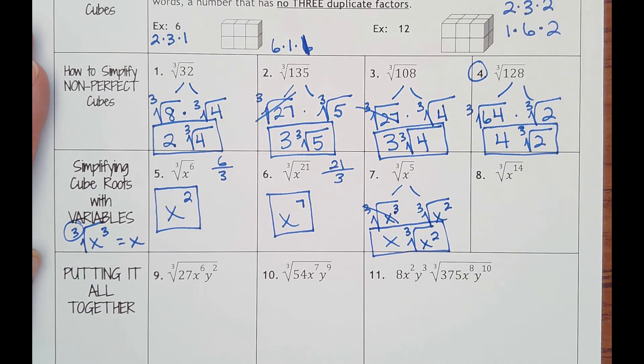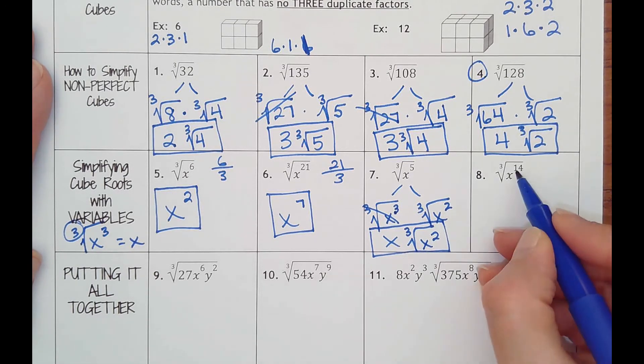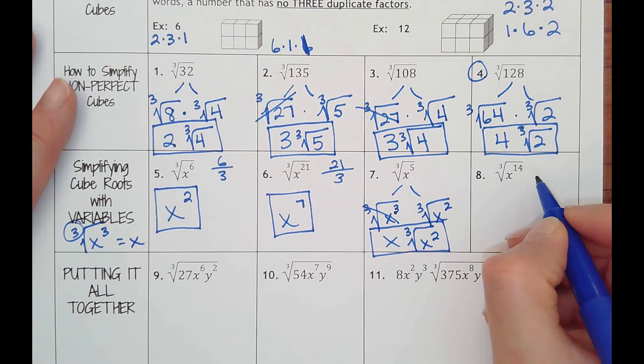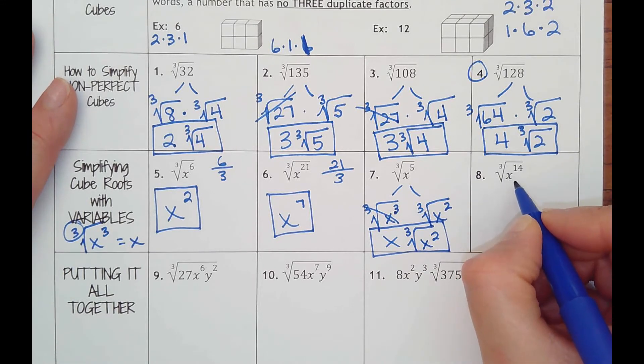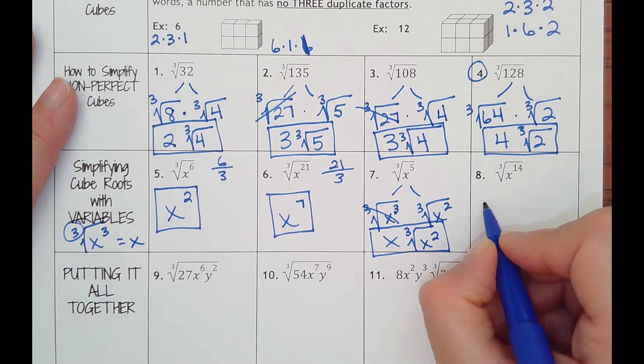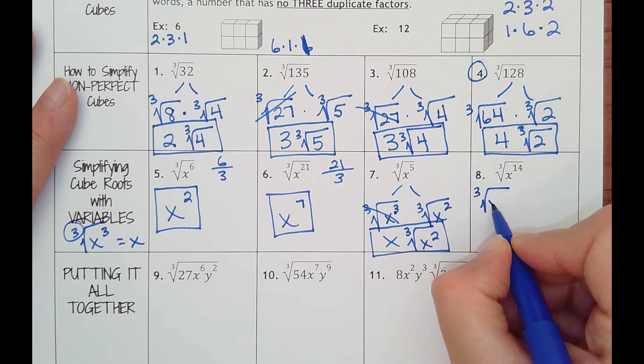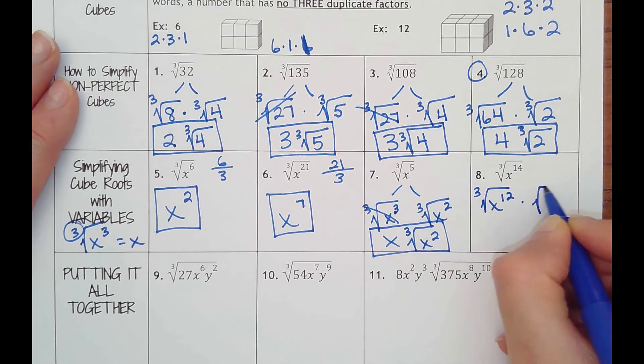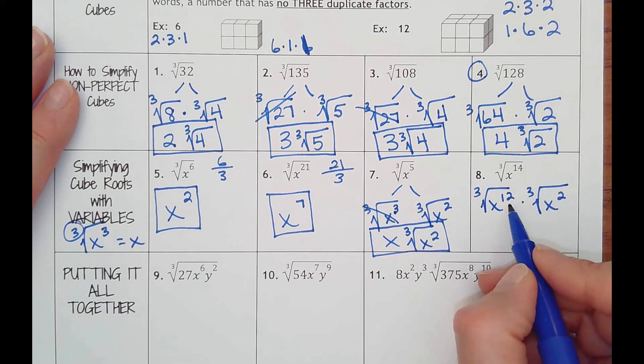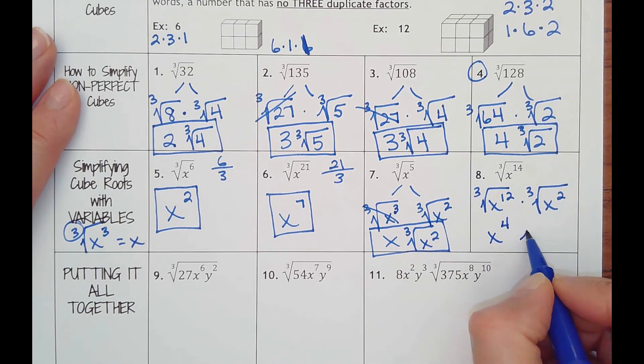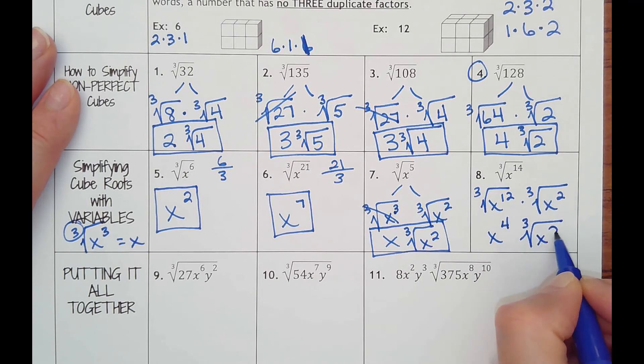Number eight. 14 is almost 15, but we can't add to it. Let's go down to the next multiple of three, which would be 12. So we'll break this into cube root of x to the 12 times cube root of x squared. 12 divided by 3 is 4, and then I have left over cube root of x squared.